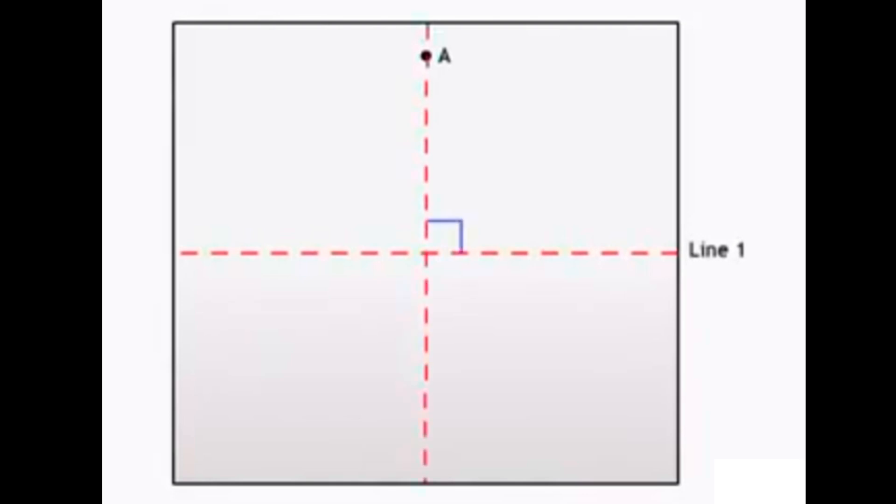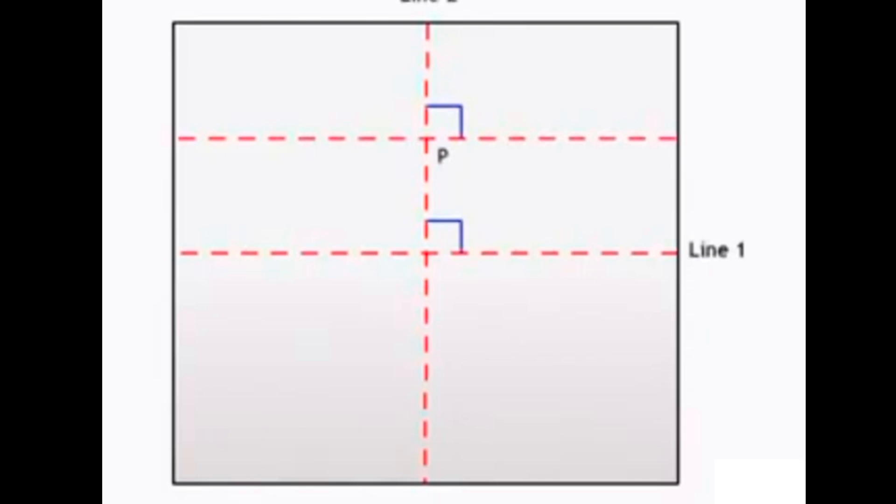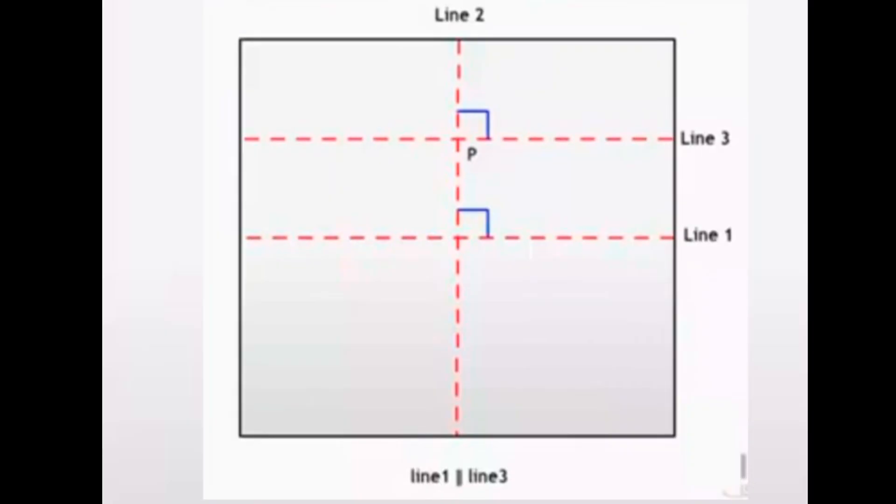It should pass through point A and make line two. Fold the upper page till line one so as to make line three, which would be perpendicular to line two. This is how you can make parallel lines which are perpendicular to the same line.